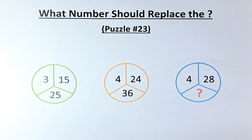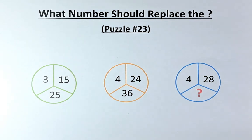The numbers in the puzzles are as follows. In the green circle, we have 3, 15 and 25. In the orange circle, we have 4, 24 and 36. And in the blue circle, we have 4, 28 and a question mark.